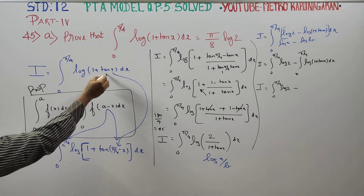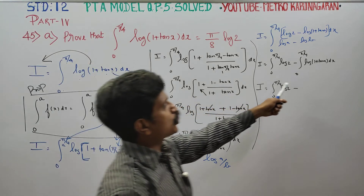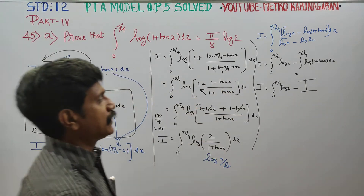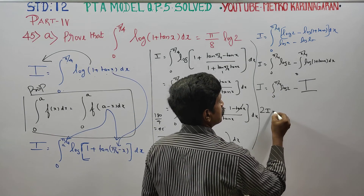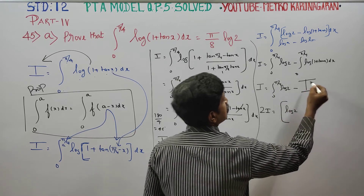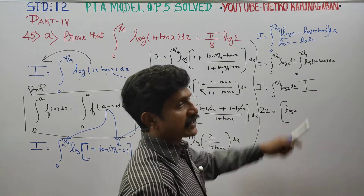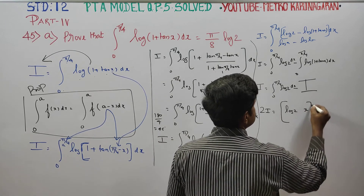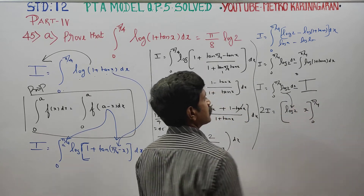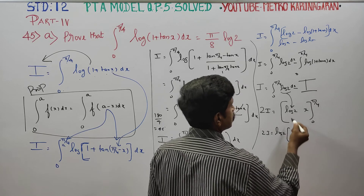Notice that ∫₀^(π/4) log(1 + tan x) dx is exactly I itself. So I = ∫₀^(π/4) log 2 dx − I, which gives 2I = ∫₀^(π/4) log 2 dx. Since log 2 is a constant, integrating gives 2I = log 2 · [x]₀^(π/4) = log 2 · π/4.